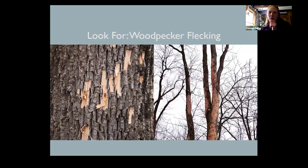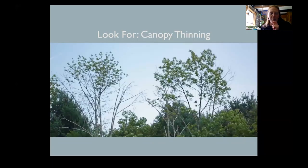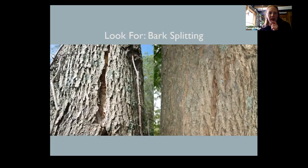Some of the signs and symptoms we're looking for — since EAB is in Vermont and many surrounding states and Canada — include woodpecker flecking, also called blonding, where woodpeckers are going after the larvae right under the bark. We're also looking for thinning canopies, because as more of the tree is girdled, you'll see less foliage. We're looking for bark splitting, because the tree is stressed and often cracking where there's a lot of larva under the bark.